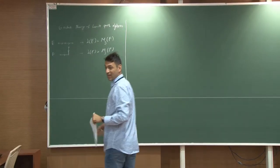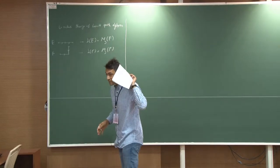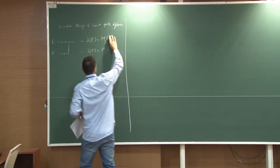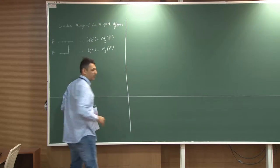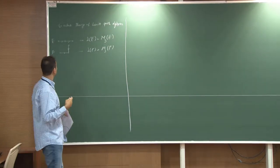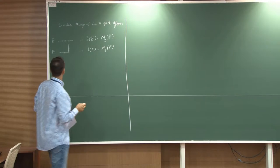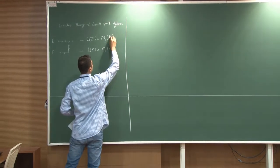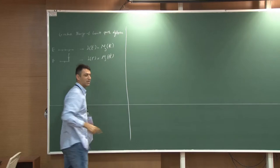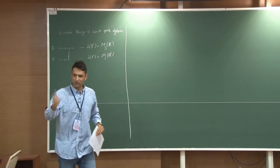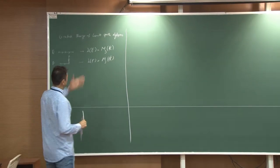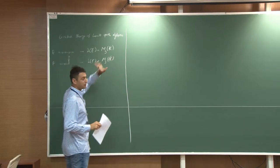Should I put K for the field? The field can be K. I deliberately put F because I don't want to mix it with K-groups, but you're right. So my coefficients are coming from the field K.